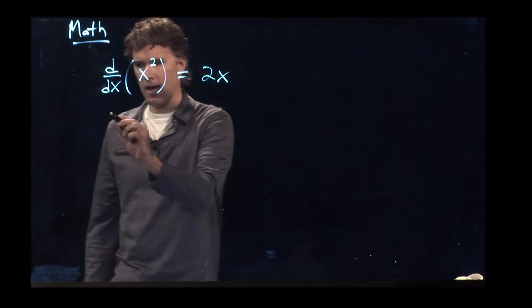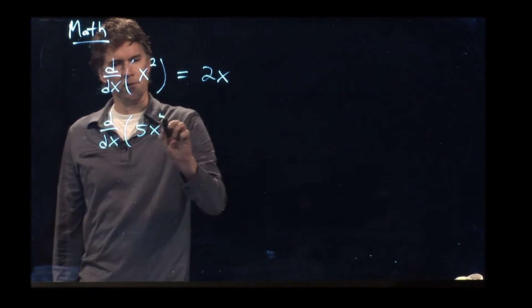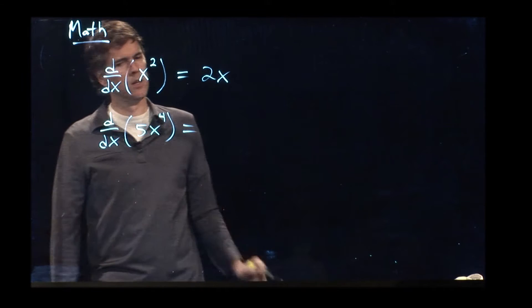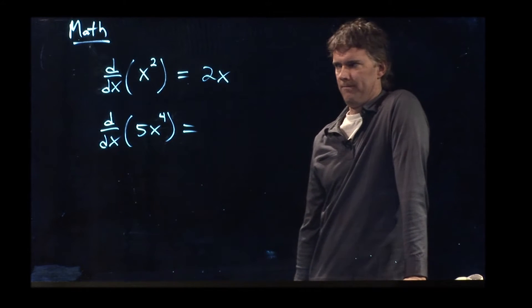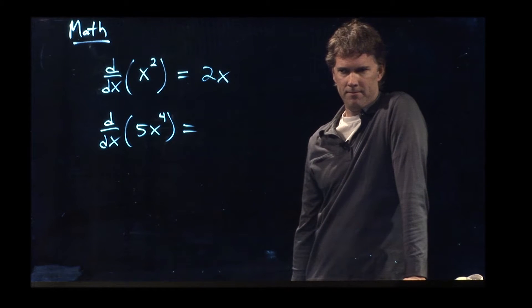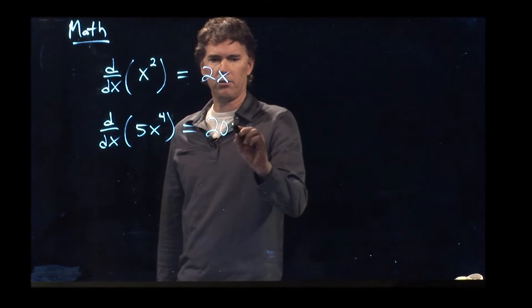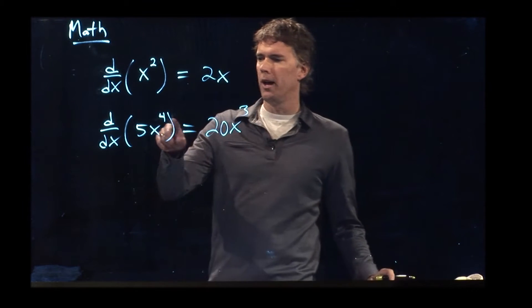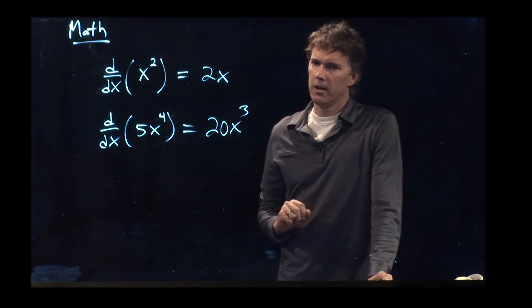If I have this, what is the derivative of 5x to the fourth? Anyone? What is it? 20x cubed. I pull down the 4, multiply it by the 5, I get 20, I subtract 1 from the exponent, I get that.